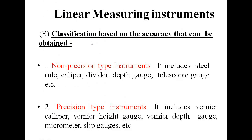Linear measuring instruments are also classified based on the accuracy that can be obtained. Number one is non-precise type instruments, which include steel rule, calipers, dividers, depth gauges, telescopic gauges, etc. Precision type instruments include vernier caliper, vernier height gauge, vernier depth gauge, micrometer, and sleeve gauge, because they have high precision.